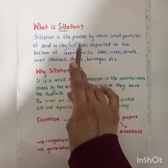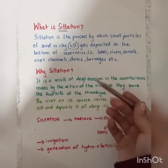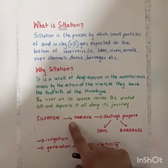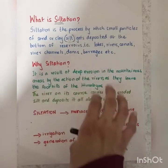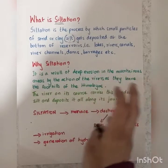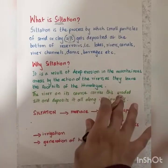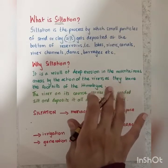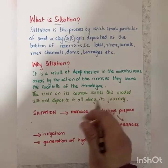Now this siltation is basically a big problem, and we'll be learning about how we can control it. We'll also look at why siltation is taking place. Siltation is a problem wherever there are rivers — in whichever country there are rivers dealing with irrigation — and there are measures by which you can reduce or control siltation.